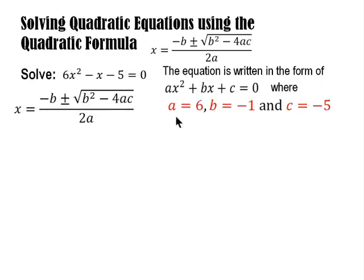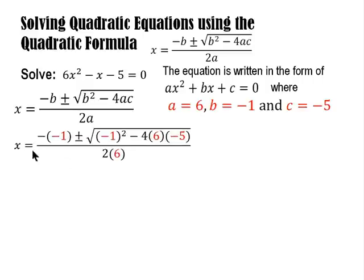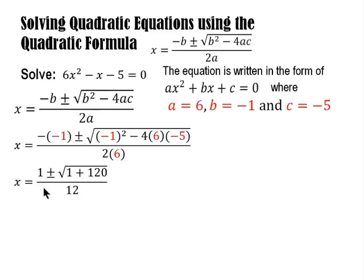All we have to do is plug these values into the quadratic formula — simple substitution. x equals negative b; our b is negative 1, so negative of negative 1, plus or minus the square root of b squared: negative 1 squared, minus 4 times a (which is 6) times c (which is negative 5), all over 2 times a (which is 6). Simplifying: negative times negative 1 is positive 1, plus or minus the square root of 1 plus — negative 5 times 6 is negative 30, times negative 4 is positive 120 — all over 12.